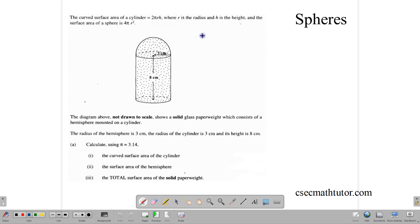We do that calculation, 2 × π × r × h, and that gives us 2 × 3.14 × the radius. The radius is 3 times the height of 8. And that gives us approximately 150.72 cm².